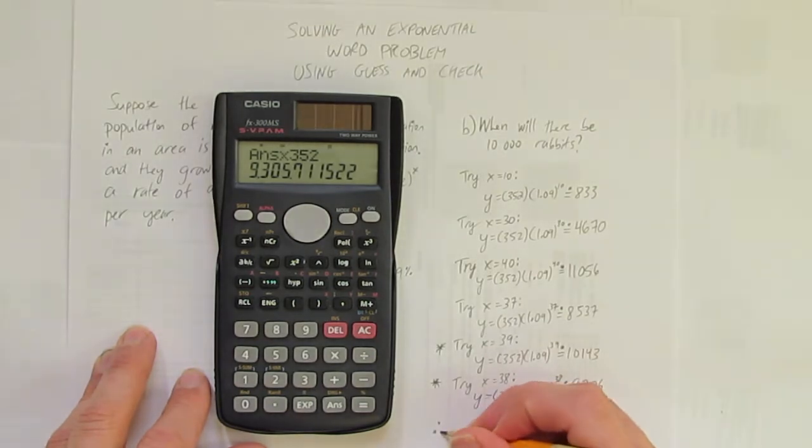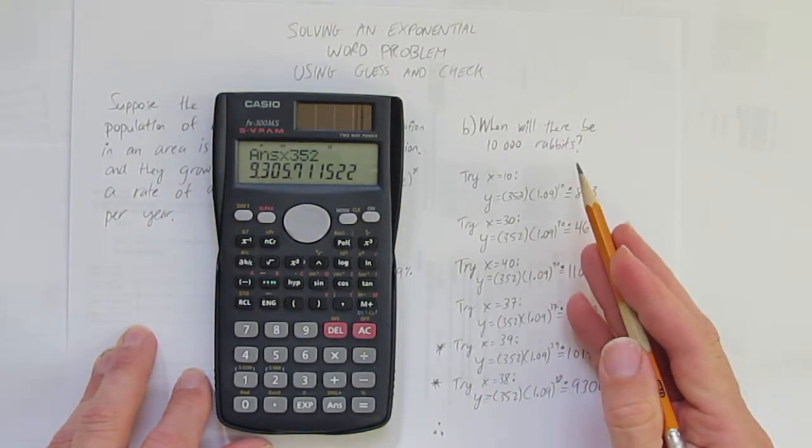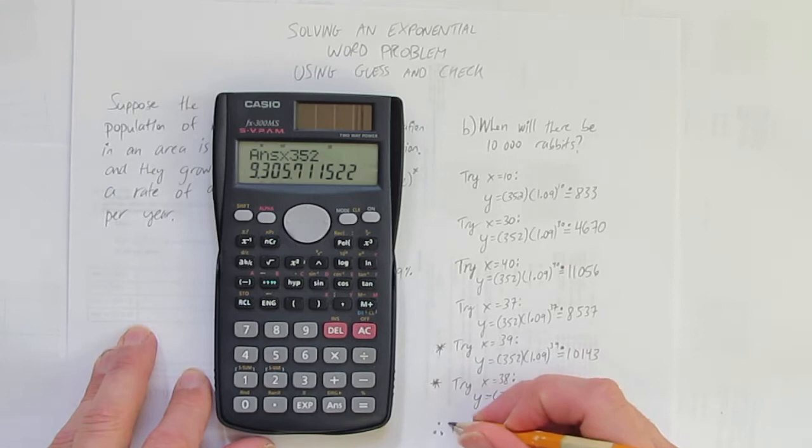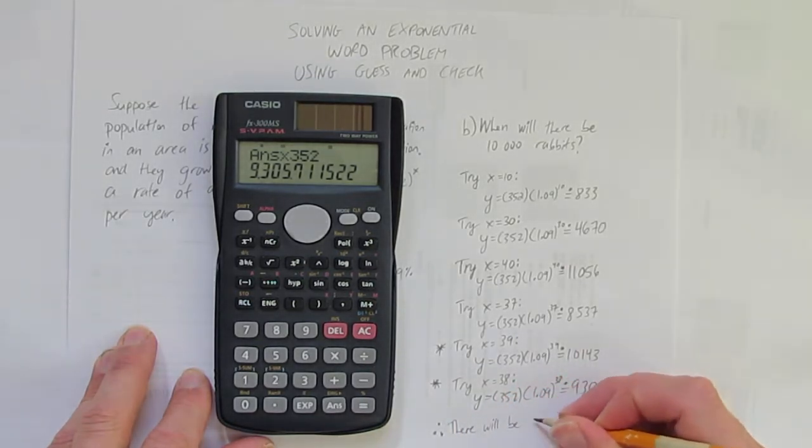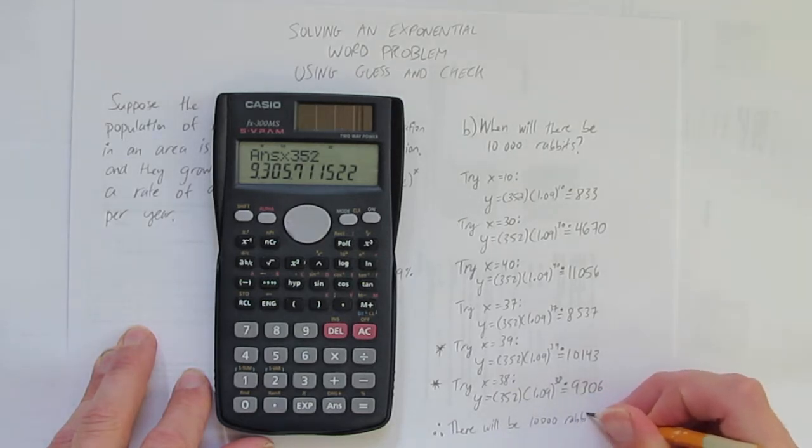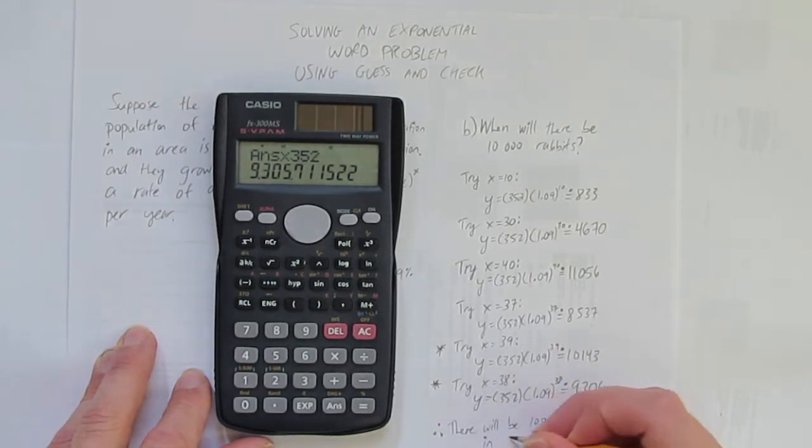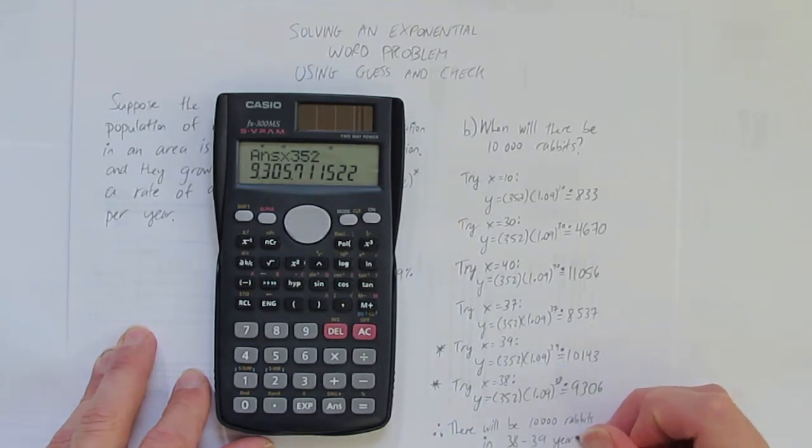And now you're there for a statement. What was the question? When will there be 10,000 rabbits? Answer. There will be 10,000 rabbits in 38 to 39 years. And we've done it.